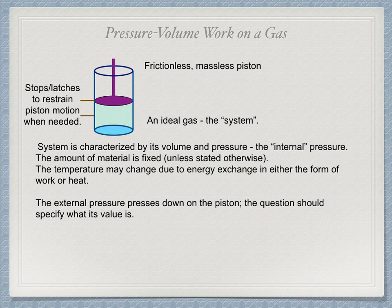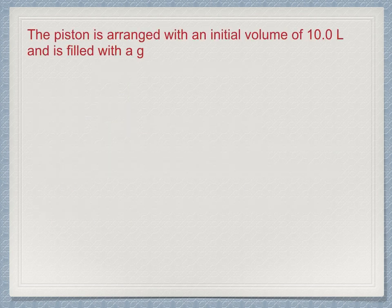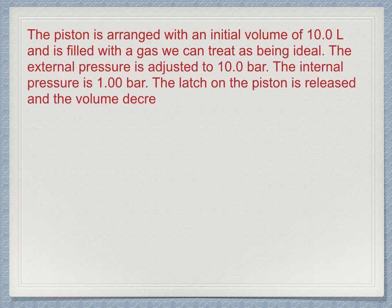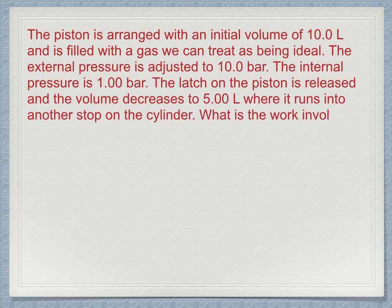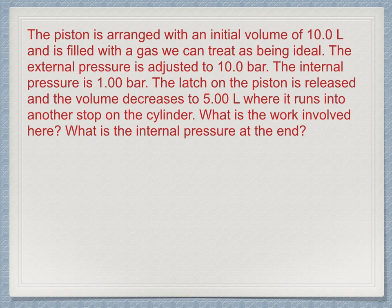Here is the first problem. The piston is arranged with an initial volume of 10 liters and is filled with a gas we can treat as being ideal. The external pressure is adjusted to 10 bar, and the internal pressure is 1 bar. The latch on the piston is released and the volume decreases to 5 liters where it runs into another stop on the cylinder. What is the work involved here? What is the internal pressure at the end?